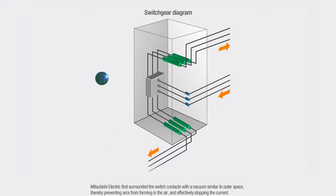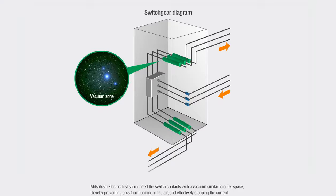Mitsubishi Electric first surrounded the switch contacts with a vacuum similar to outer space, thereby preventing arcs from forming in the air and effectively stopping the current.